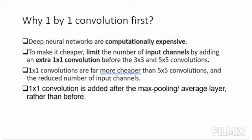Though adding an extra operation may seem counterintuitive, 1x1 convolutions are far more cheaper than 5x5 convolutions and reduce the number of input channels.